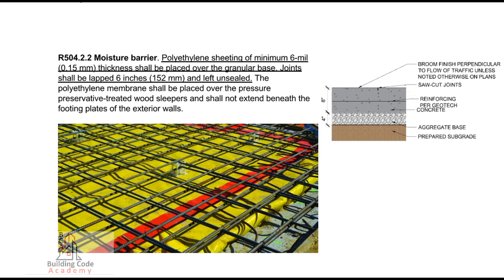R-504.2.2, Moisture Barrier. Polyethylene sheeting of minimum 6 mil (0.15 millimeter) thickness shall be placed over the granular base. Joints shall be lapped 6 inches (152 millimeters) and left unsealed. The polyethylene membrane shall be placed over the pressure-preservative-treated wood sleepers and shall not extend beneath the footing plates of the exterior walls.